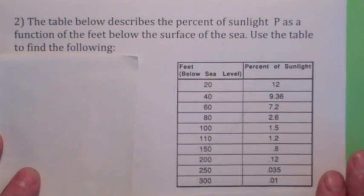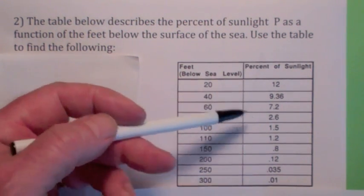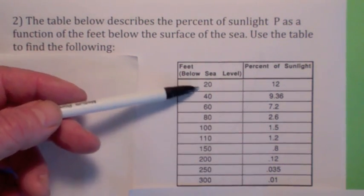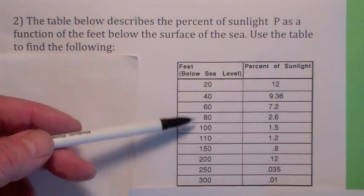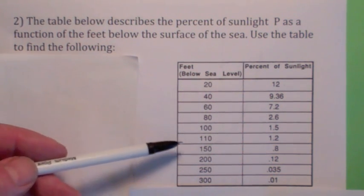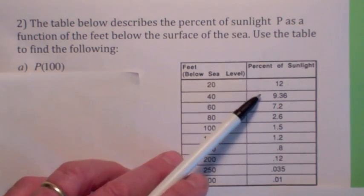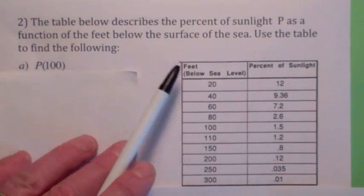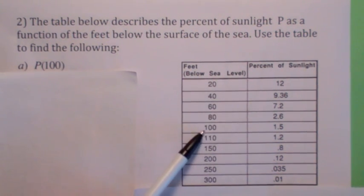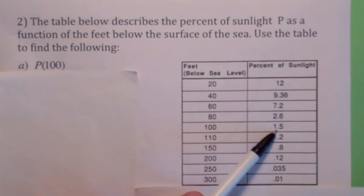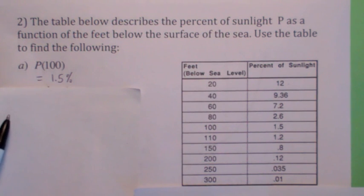This table here tells you the percent of sunlight P as a function of the feet below the surface of the sea. So p of 100 would be the percent of sunlight that penetrates 100 feet below the surface. So when h or x is 100, the percentage is 1.5%. See how this table works?